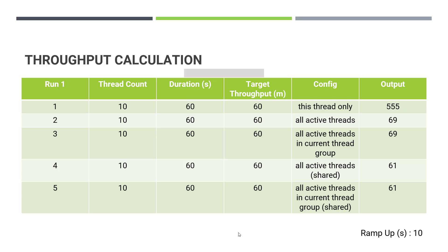As you see on the screen, there are five runs, each with 10 threads for the duration of 60 seconds, targeting the throughput of 60 samples per minute. The ramp-up of this experiment is 10 seconds for all the runs.